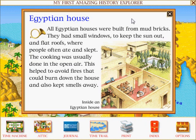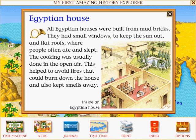Egyptian house: All Egyptian houses were built from mud bricks. They had small windows to keep the sun out and flat roofs, where people often ate and slept. The cooking was usually done in the open air. This helped to avoid fires that could burn down the house, and also kept smells away.